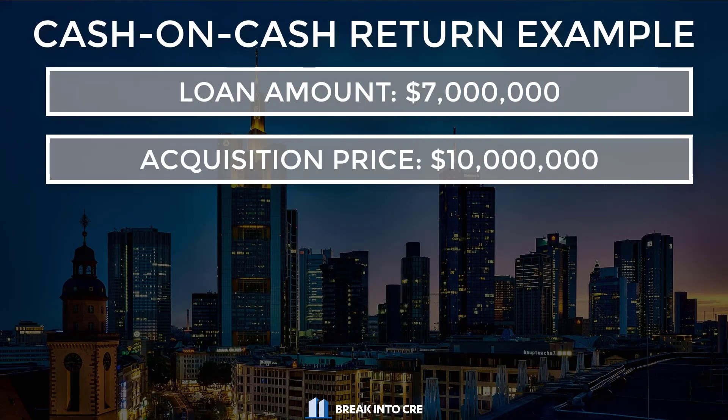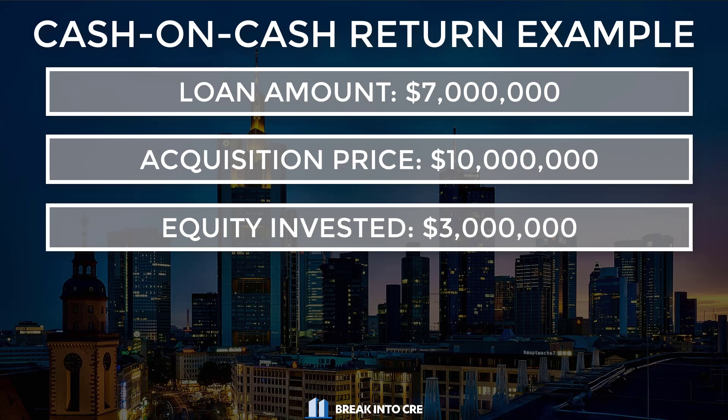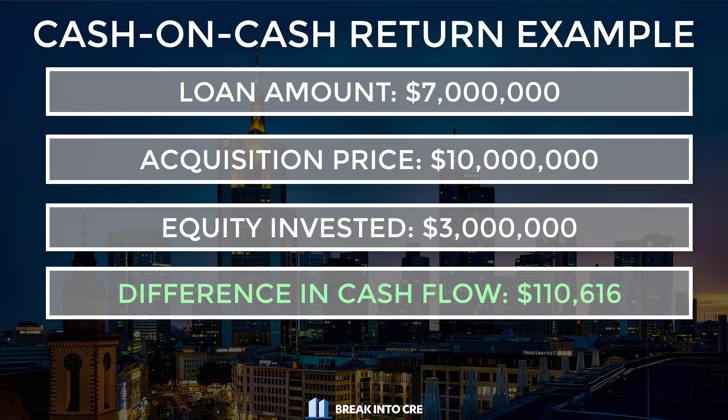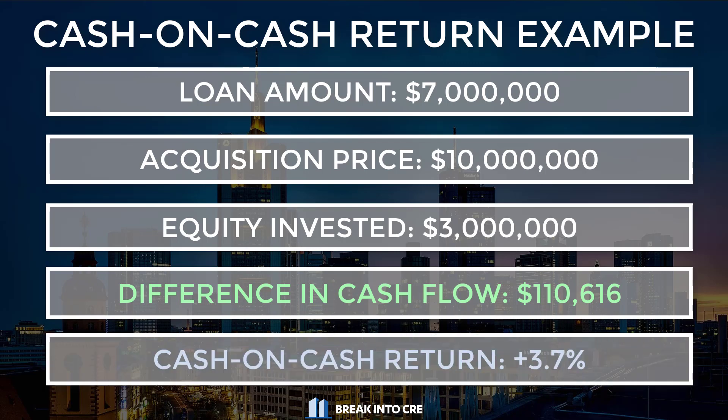When you look at it from a cash on cash perspective — meaning the cash flow that you receive as a percentage of your equity invested up to that point — that's where you start to see even bigger differences. If we assume that $7 million loan is on a $10 million acquisition, that means we have $3 million of equity invested in the deal. A difference of over $110,000 per year would mean a 3.7% difference in cash on cash returns each year, which is huge, especially for investors looking for a high yield. Adding an interest only period can take cash on cash returns from 3 or 4% to maybe 7 or 8%, which is a much more attractive number to investors.